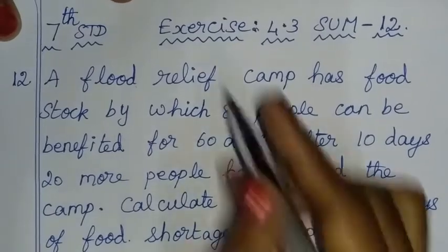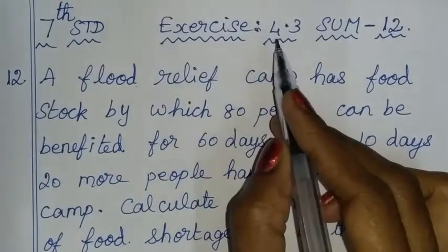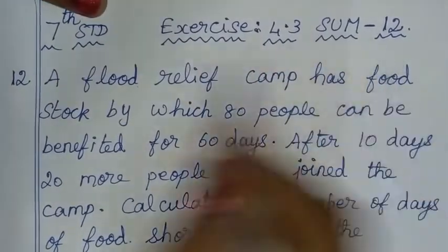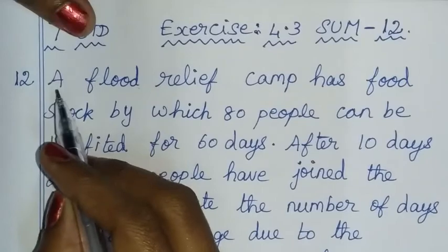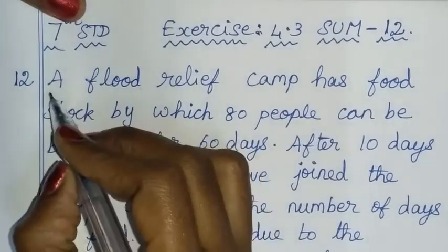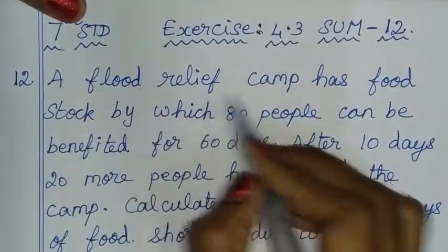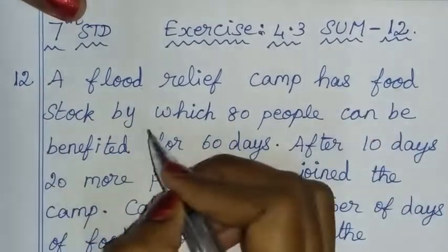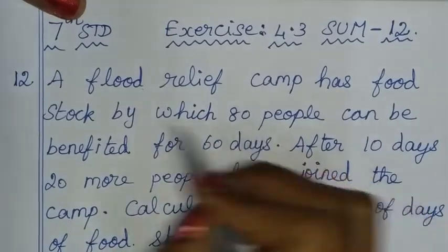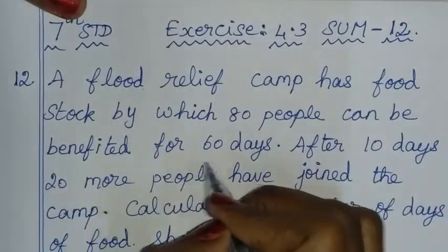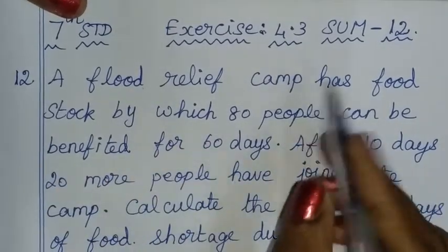Hello children, I will talk to you about exercise 4.3, sum number 12. A flood relief camp has food stock by which 80 people can be benefited for 60 days.